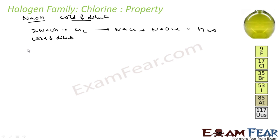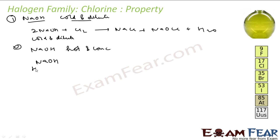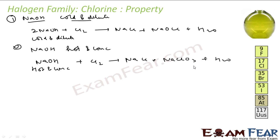But if instead you take hot and concentrated NaOH and react it with chlorine, you get NaCl, NaClO3 (sodium chlorate), and water. So with hot and concentrated alkali, chlorine gives chloride and chlorate. You can write the balanced reaction for this.